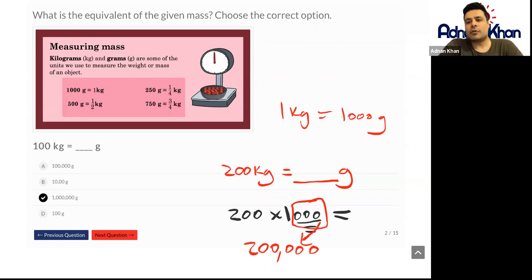So 200 kilograms will now be 200,000 grams. When you multiply by 1000, you just add three zeros at the end. When you multiply by 100, you just add the two zeros at the end, because 100 has two zeros. And when you multiply by 10, then you just add one zero at the end, because 10 has one zero.